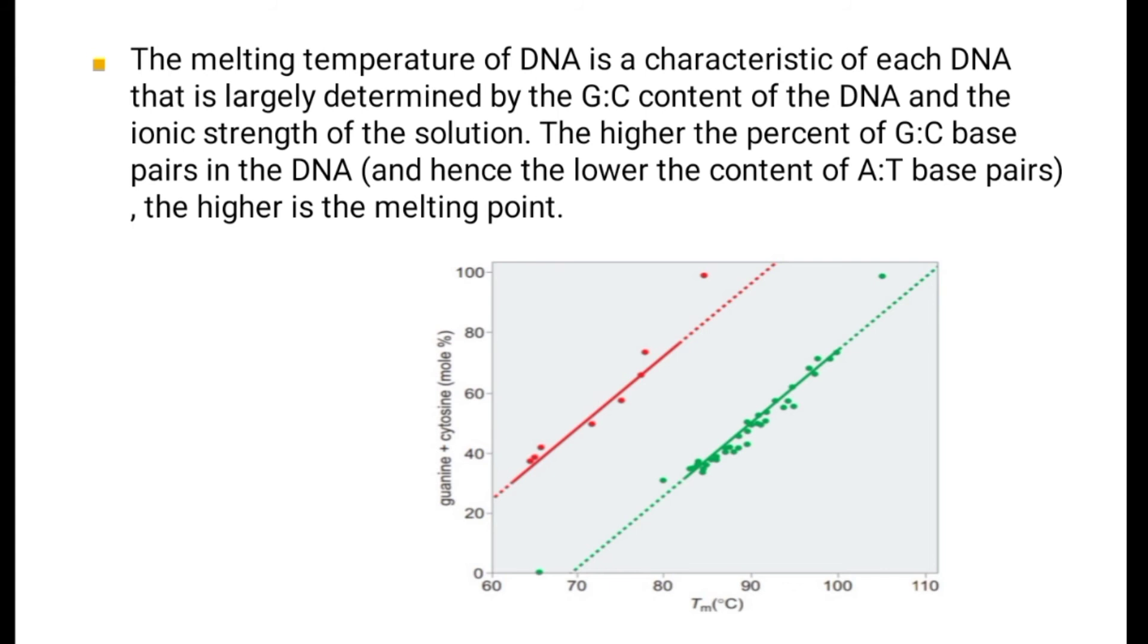Dependence of DNA denaturation on G-C content and on salt concentration: The greater the G and C content, the higher the temperature must be to denature the DNA strand. DNA from different sources was dissolved in solutions of low (red line) and high (green line) concentrations of salt at pH 7.0. The points represent the temperature at which the DNA denatured, graphed against the G-C content.